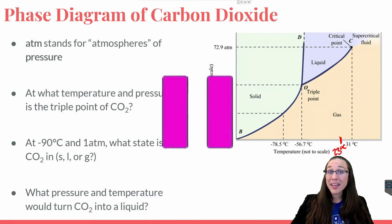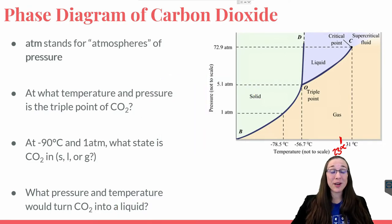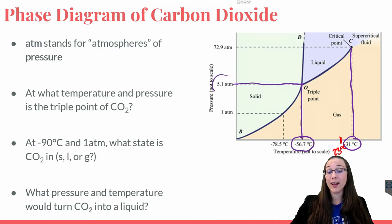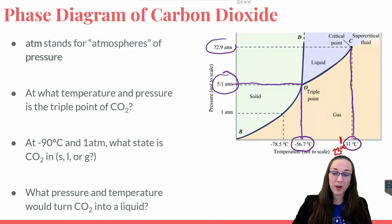There could have been many correct answers for which pressure and which temperature would turn CO2 into a liquid, but you would at least need a temperature of negative 56.7 degrees Celsius, and at most a temperature of 31 degrees Celsius, and pressure-wise, you would at least need 5.1 ATMs of pressure, and you could have equal to or greater than 72.9 ATMs of pressure as well.